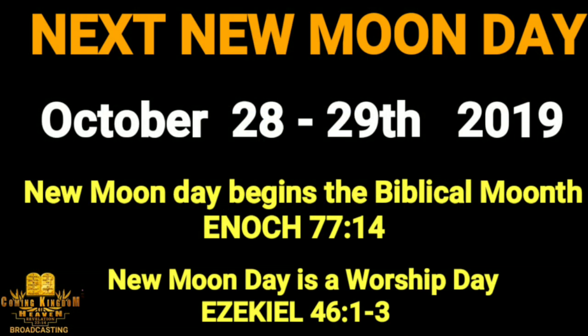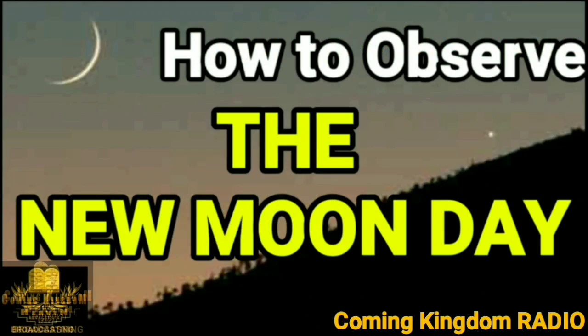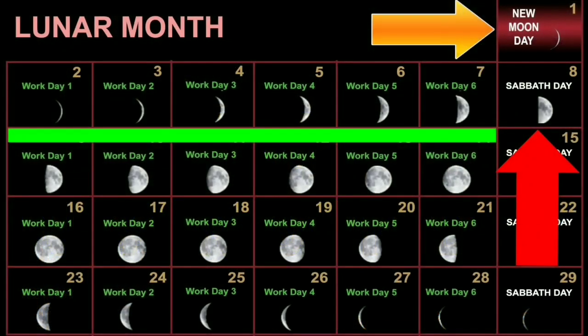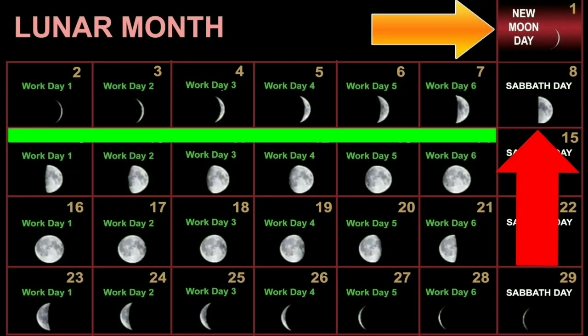There are three types of days. Let's start from understanding the three types of days: new moon day, work day, and Sabbath day.